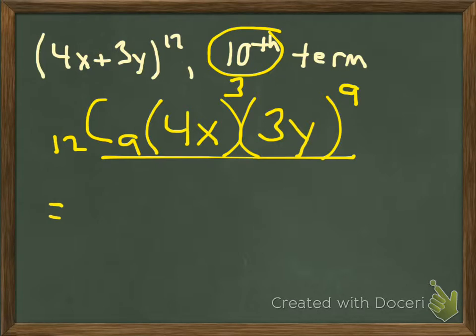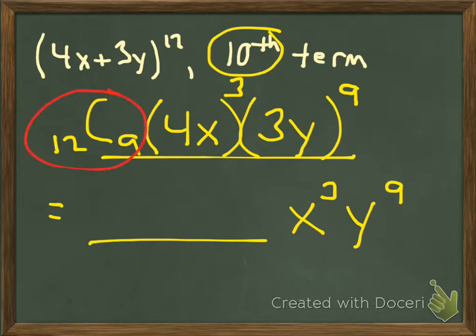Now this one's going to take a little bit more work in our calculator. I'm actually going to start at the end. At the end, I will have x cubed y to the ninth. I know that. Just what is the coefficient going to be? Well, all the pieces that make up the coefficient are 12 choose 9, 4 to the third power, and 3 to the ninth power.